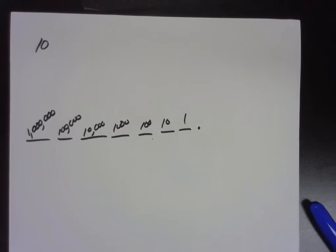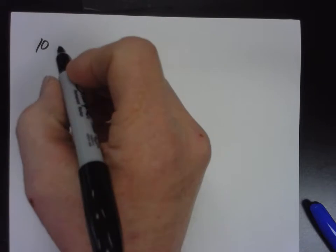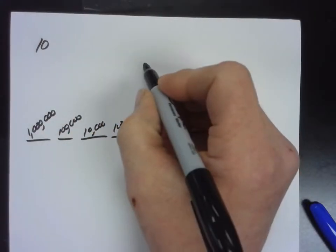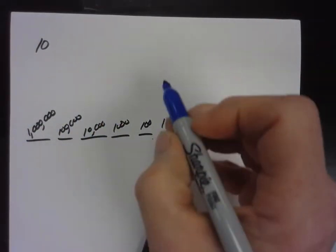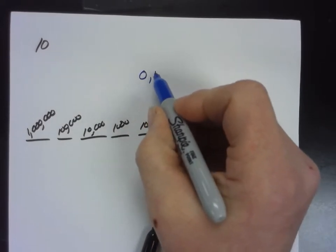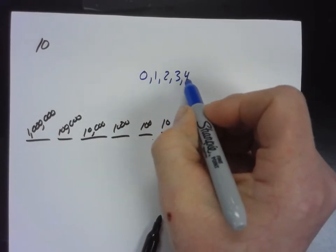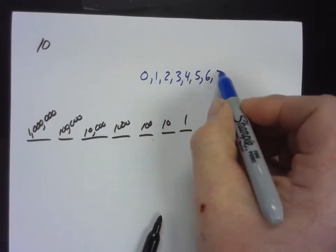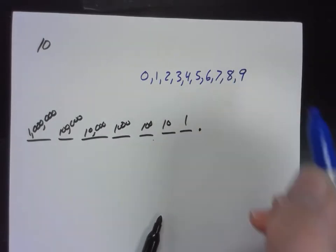So we have our place values, which is the only reason we can express a number that's greater than 9. If you think about it, we have these digits that we use. Here, I'll write them in blue. 0, 1, 2, 3, 4, 5, 6, 7, 8, and 9. We only have those 10 digits.